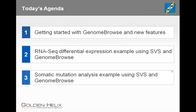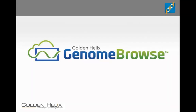I'll start by walking through Genome Browse, highlighting the experience from the perspective of a new user, while pointing out new features that have recently been added. Major additions since the original release include support for directly viewing VCF files and BED files, as well as a useful tool for generating a table of data based on the genomic data visible in the visualization. From there, we'll show two examples of SVS and Genome Browse working together — first an RNA-seq analysis project, then a DNA sequencing project based on somatic mutation analysis from a gastric cancer sample.